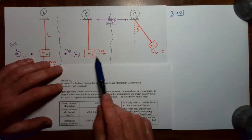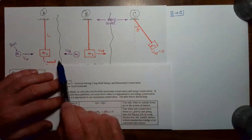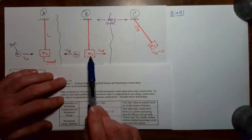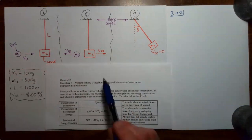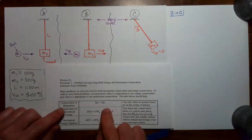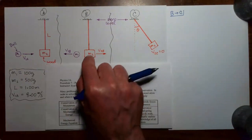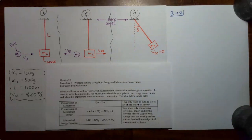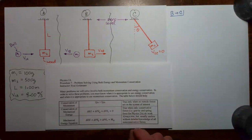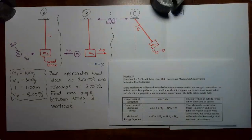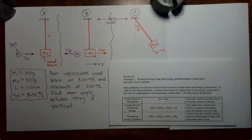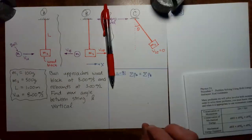For the B to C step, mass 1 is no longer a player — it did its job colliding into mass 2 and is moving away. So we're interested in just mass 2. Can we apply conservation of momentum to mass 2? No, because the tension in the string and the gravitational force are acting on it. Can we use conservation of mechanical energy from B to C? The forces acting are gravity, which is conservative, and the tension force from the string. The tension force is technically non-conservative, but we don't actually have to worry about it here.